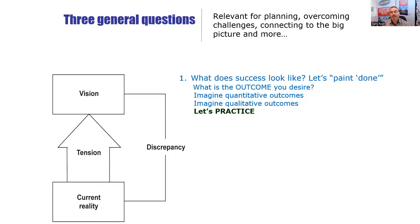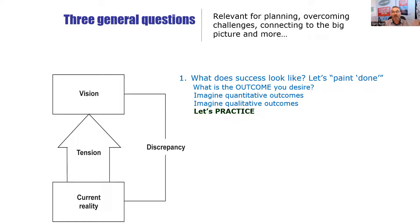The first thing to do is get used to this idea of starting with what does success look like — what does my outcome look like? We call this 'painting done.' When we're successful with the whole year for our club, what will done look like? When we're successful with this event we're planning for our club, what would done look like? Imagine quantitative outcomes — things to do with numbers. So how many people would have attended this event? How many members, how many potential new members, or first-time people who came with a member for a bring-a-friend?